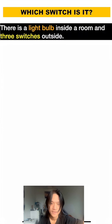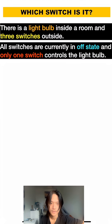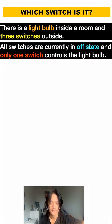Which switch is it? There is a light bulb inside a room and three switches outside. All switches are currently in the off state and only one switch controls the light bulb.